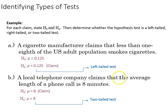Or a telephone company claims the average length of a phone call is eight minutes, and we're not saying more or less there, we're just saying equal, and that's the claim for the null hypothesis. So the alternative is that it's not equal, and that's going to necessitate a two-tailed test, whereas the prior example would be a left-tailed.